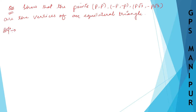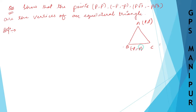The question says: show that the points (P, P), (-P, -P), and (P√3, -P√3) are the vertices of an equilateral triangle. So let us take triangle ABC, where A is (P, P), B is (-P, -P), and C is (P√3, -P√3). Let triangle ABC be the given triangle.